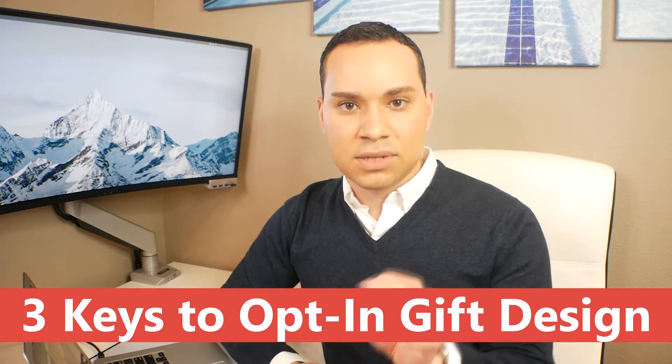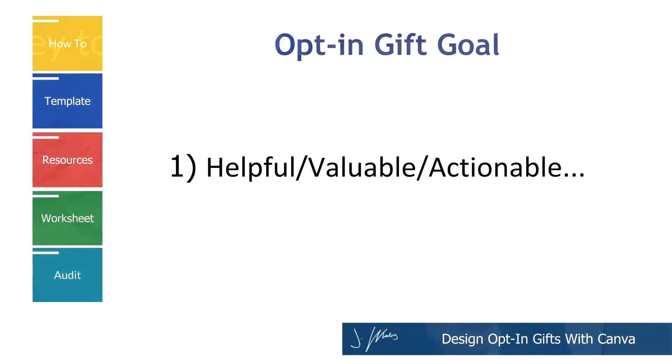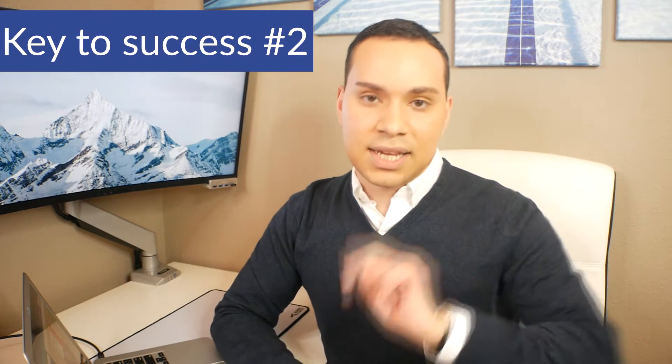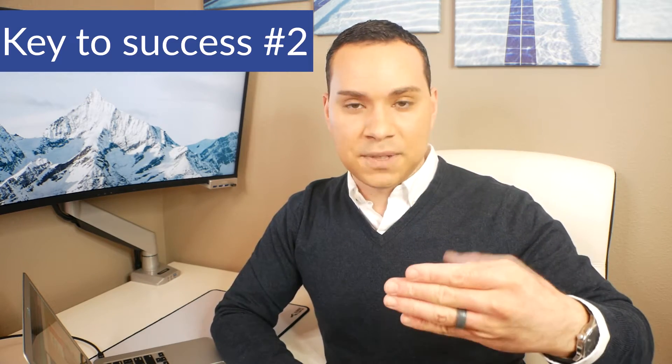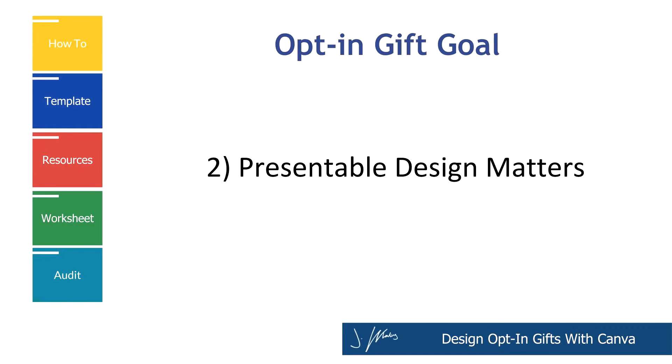But before we dive into those five and all those examples, there are three keys to success when it comes to designing your opt-in gifts to grow your email list. The first key to success is making sure that whatever information you're putting inside your opt-in offer is valuable and actionable. The second key to success is making sure that you not only focus on the value of content you're delivering inside of your opt-in gift, but you're also focused on how you deliver that — and that's the design. Because when it comes to your lead magnets or your opt-in gifts, your opt-in offers, this is the first time that someone is engaging with you and your brand. They've taken a big step by providing their contact information. So make sure that the information you're delivering is not only valuable and actionable, but it's presented in a good looking way.